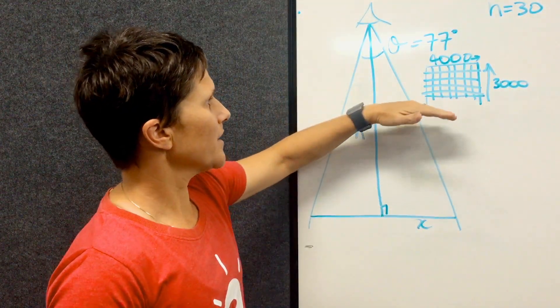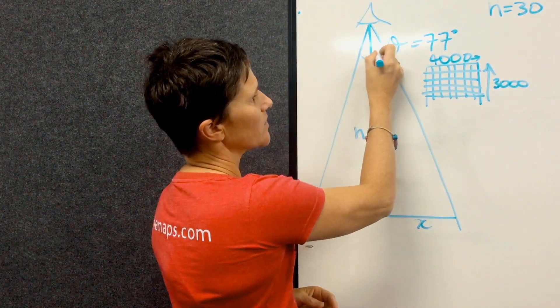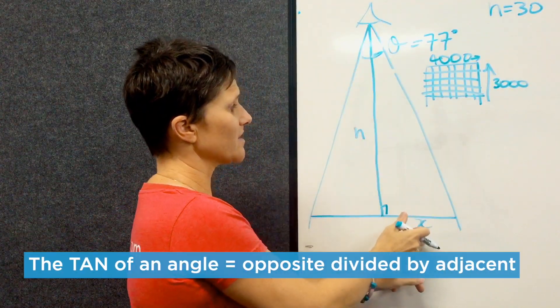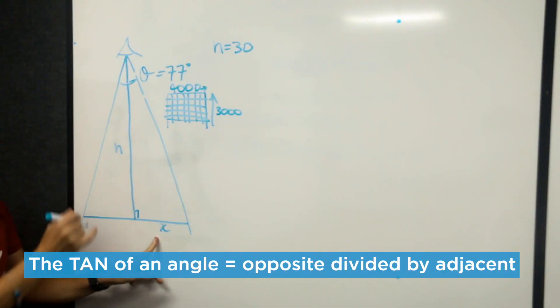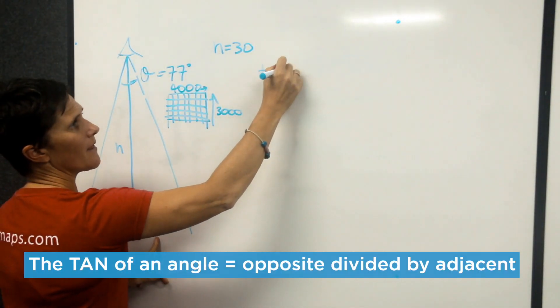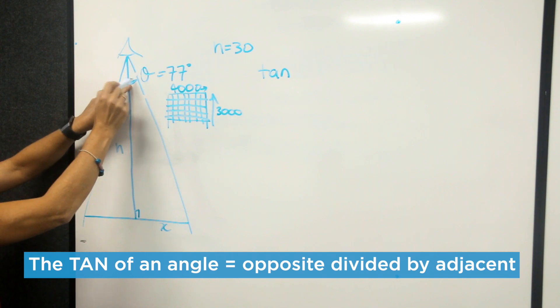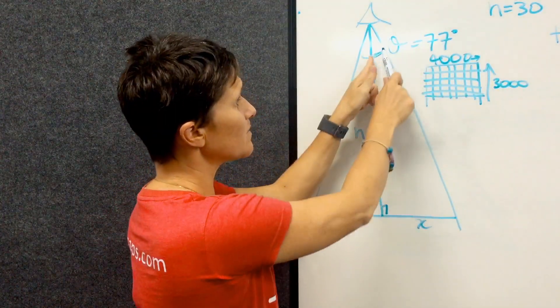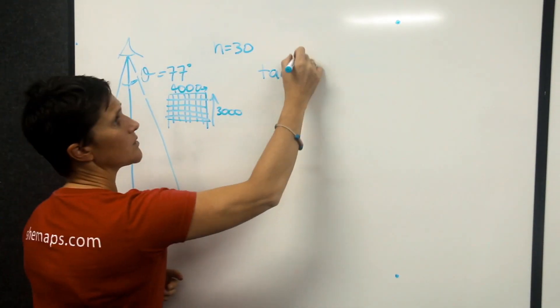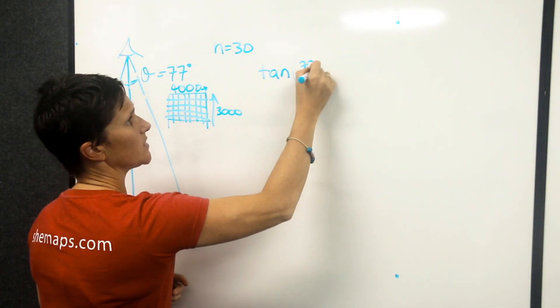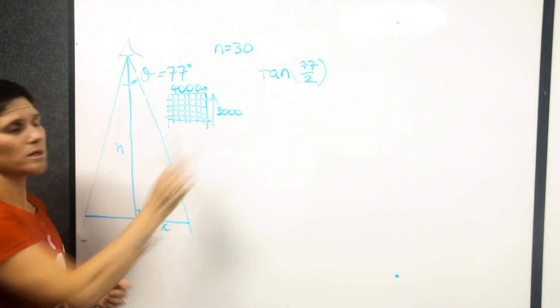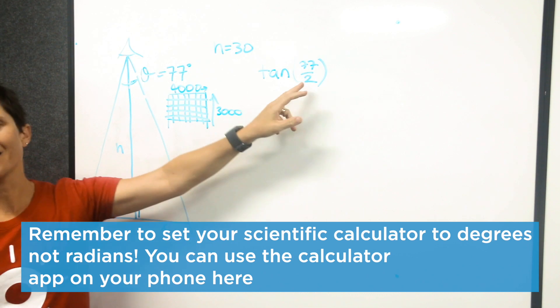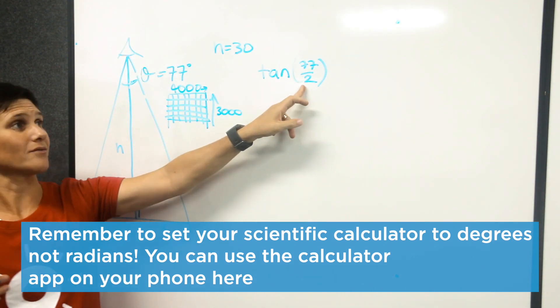So here we go, we are going to use this angle here and we're going to use tan, opposite on adjacent. So what we want to do is go the tan of this angle, which we know the whole angle is 77, so this part of the angle must be half of that. So let's go the tan of 77 on 2. Now remember, make sure you put your brackets in there and you also want to make sure that your calculator is calculating this in degrees and not radians.